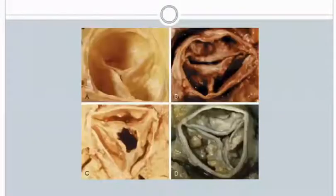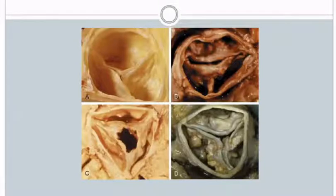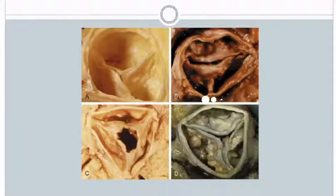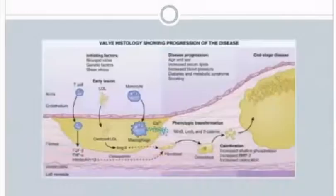Our main focus is on valvular aortic stenosis. In the picture, the top left shows the normal aortic valve, the top right shows bicuspid aortic valve stenosis, the bottom left shows rheumatic aortic stenosis with fused commissures, and the bottom right shows calcific degenerative aortic stenosis.